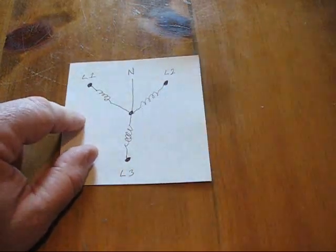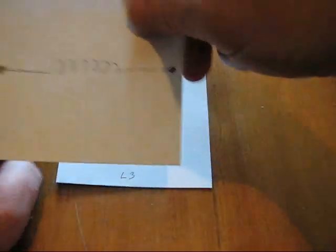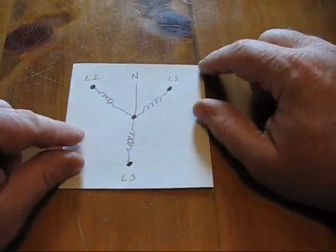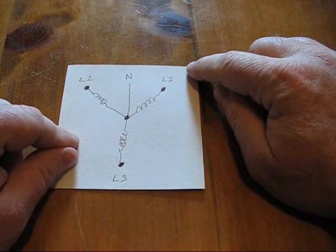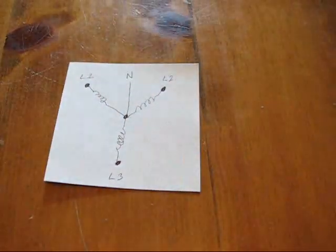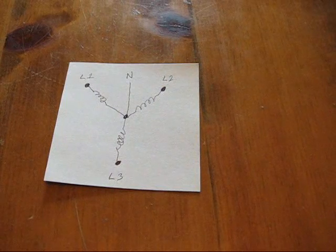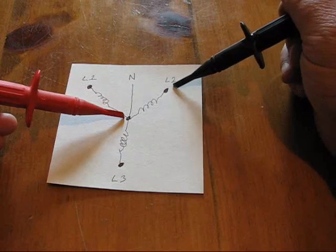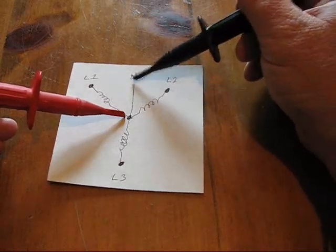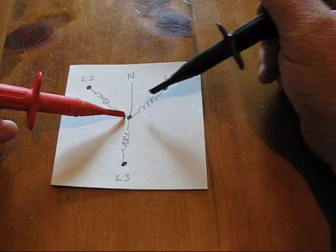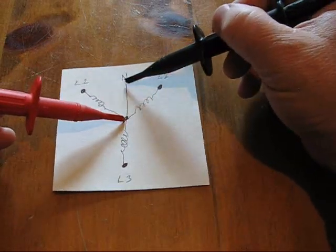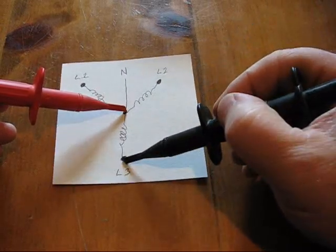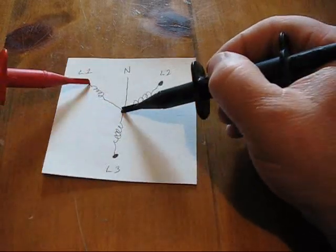Let's call each of these coils 110 volts, just for the sake of argument. Between either of these coils and neutral, you have 110 volts. Of course there you have zero volts because that is neutral. But between these two points, 110. These two points, 110. These two points, 110.